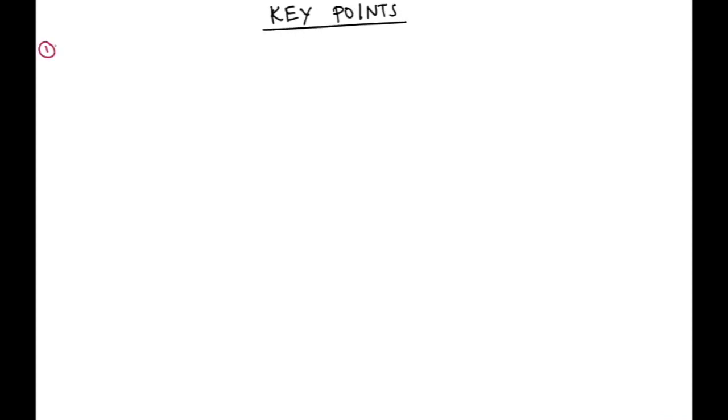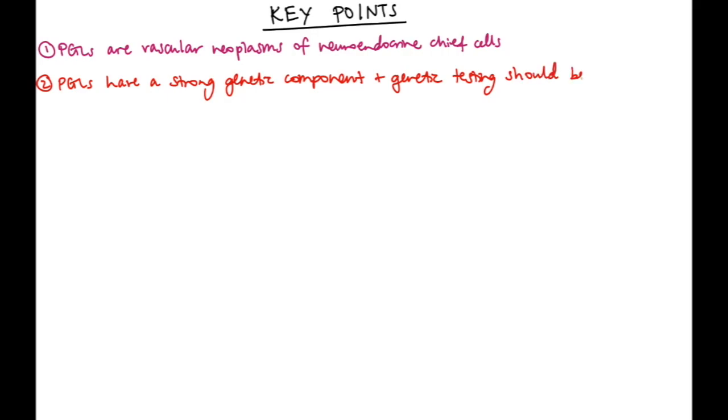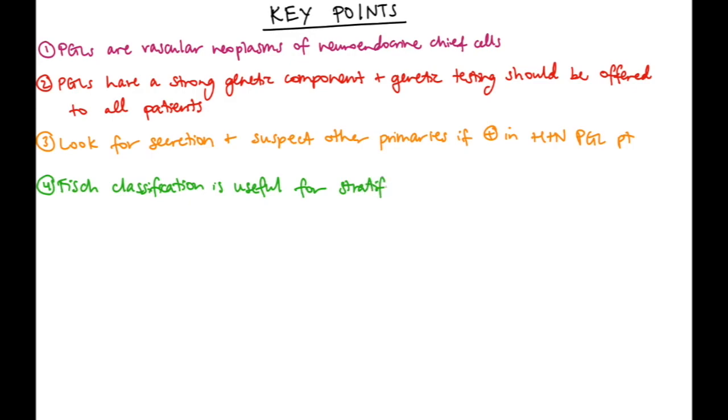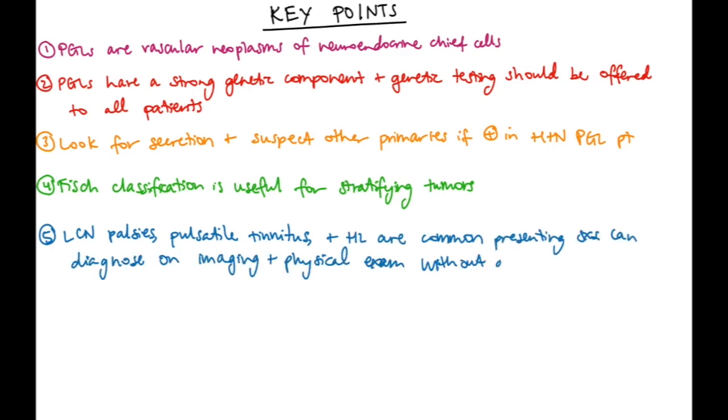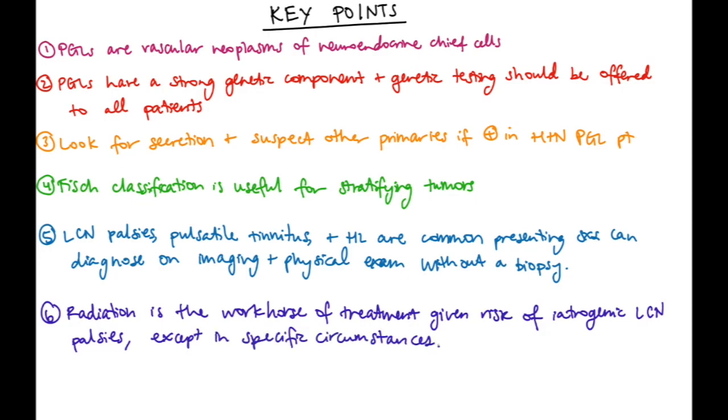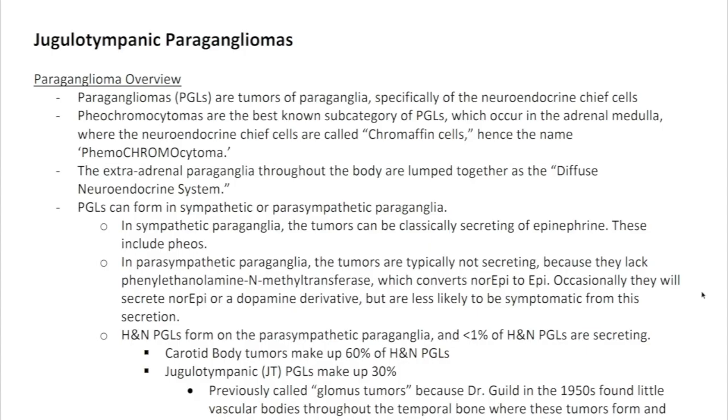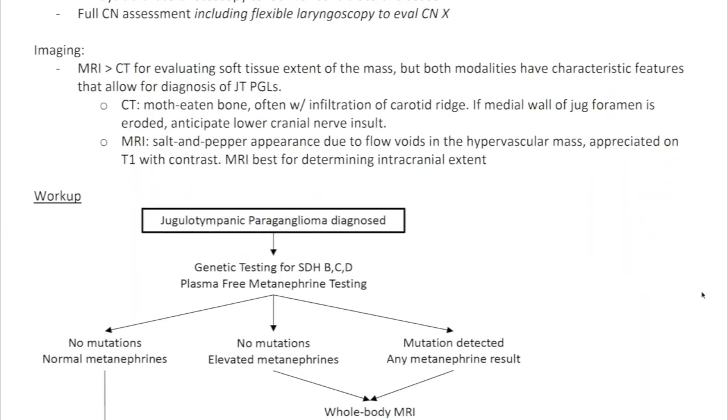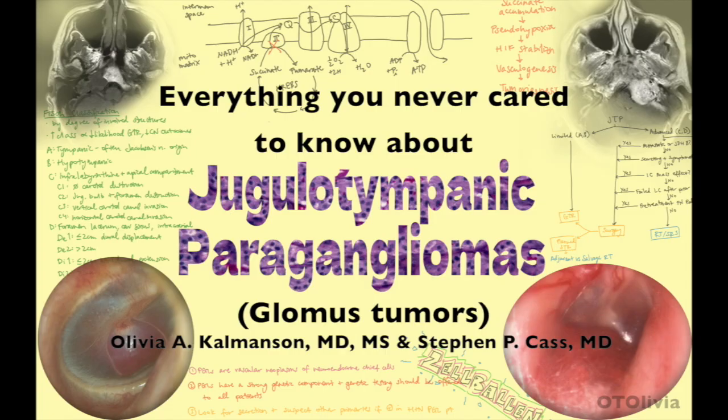So to summarize, paragangliomas are vascular neoplasms of neuroendocrine chief cells. They have a strong genetic component, and genetic testing should be offered to all patients. Look for secretion and suspect other primaries if they're positive in a head and neck paraganglioma patient. The FISH classification is useful for stratifying tumors and can help guide management. Lower cranial nerve palsies, pulsatile tinnitus, and hearing loss are common presenting symptoms, and you can diagnose this tumor on imaging and physical exam without a biopsy. Radiation is the workhorse of treatment given the risk of iatrogenic lower cranial nerve palsies except in specific circumstances. I know my handwriting is abysmal, and so there's a typed summary of this entire lecture in the Google Drive, which is linked in the video description. Thanks so much for watching. Hopefully you found it helpful. And feel free to like or subscribe if you don't want to miss the next one.